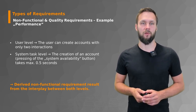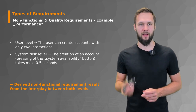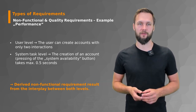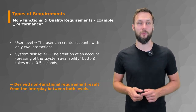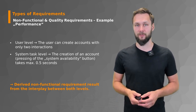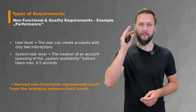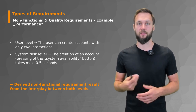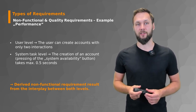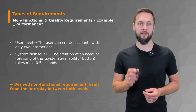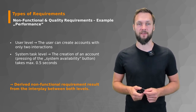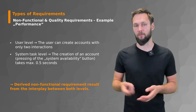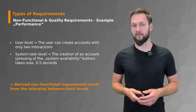As an example, let's look at performance from different levels of the system. At the user level, performance could mean that the user can create an account with only two interactions — for example, entering a username and clicking register. At the system level, performance might mean that the account creation process takes a maximum of half a second. Non-functional requirements are derived from the interplay between both of these levels.